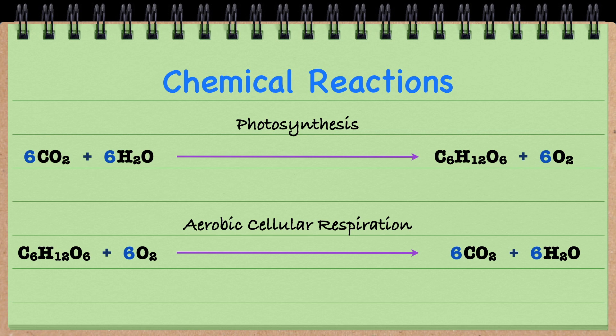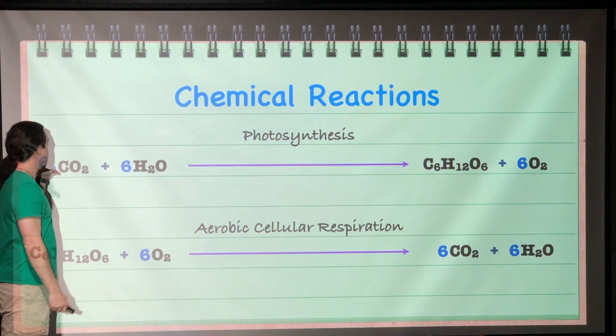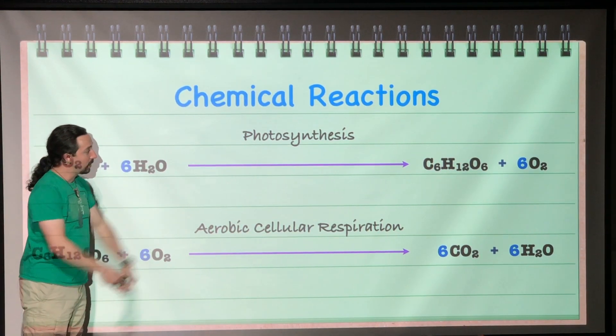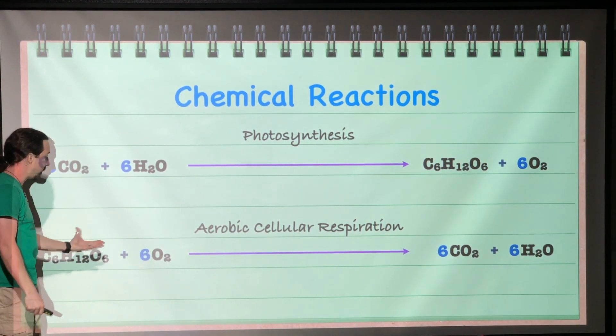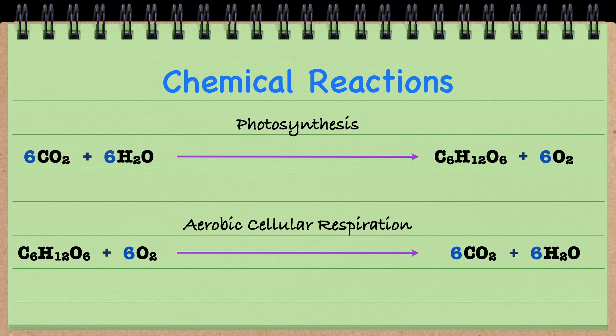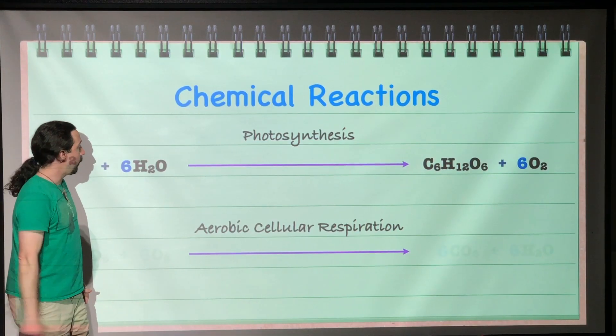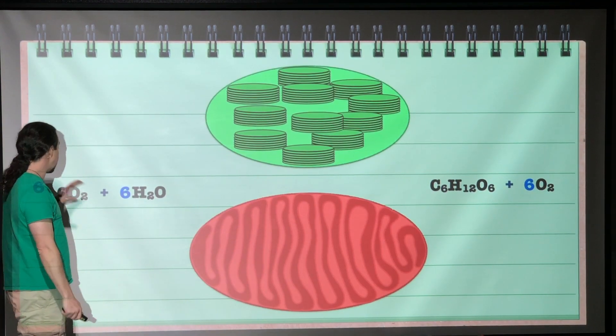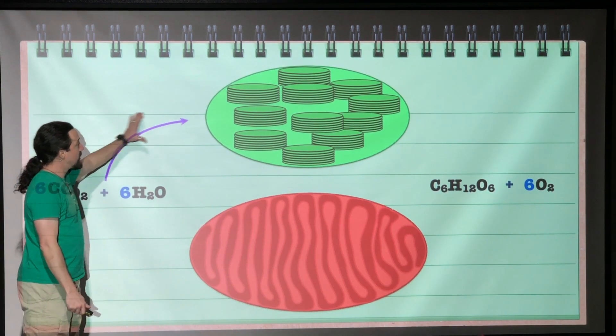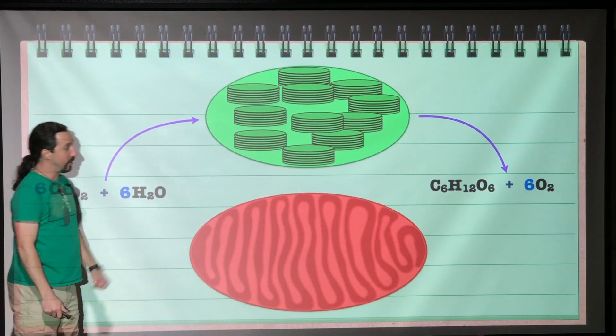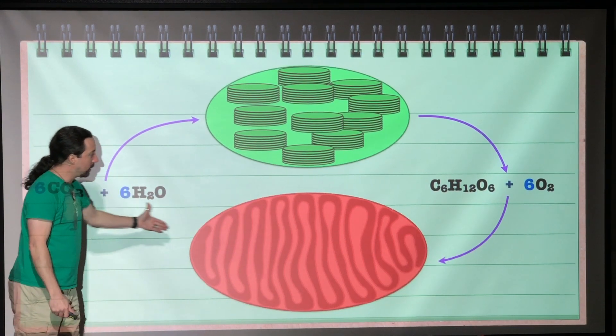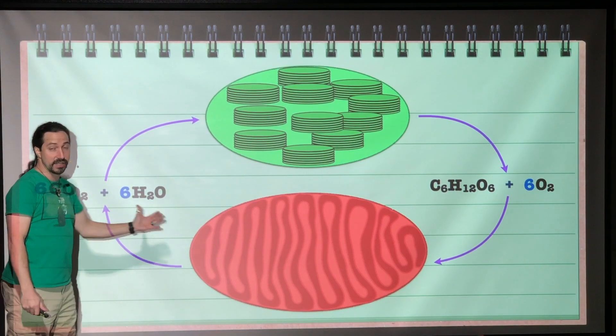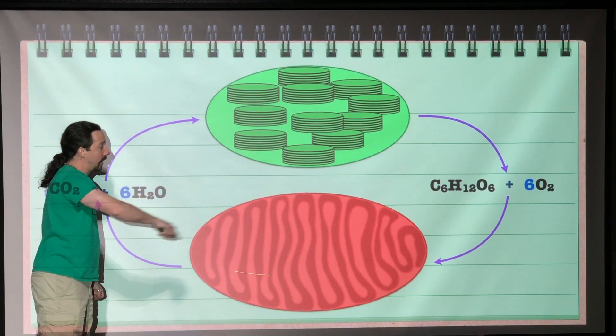Overall, our chemical reactions, you should hopefully see that they look really similar. For photosynthesis, it's six carbon dioxide plus six waters is going to yield one glucose molecule and six oxygen molecules. On the other hand, aerobic cellular respiration is going to take one glucose molecule and react with six oxygen molecules resulting in six carbon dioxides and six water molecules being produced. They are the exact opposites. The six CO2s plus six H2Os feed the chloroplast for photosynthesis and result in one glucose and six oxygens. And then those six oxygens and that one glucose will feed the mitochondria resulting in the production of six CO2s and six H2Os. So we have this cycle between the mitochondria and the chloroplast.